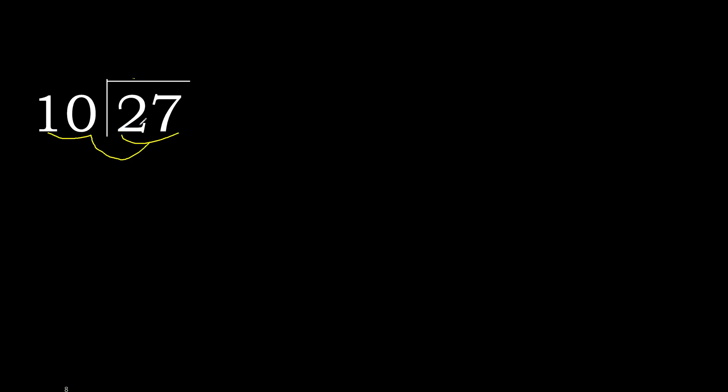27 divided by 10. 2 is less, therefore next. 27 is not less, so with 27, 10 multiplied by which number is nearest to 27 but not greater? 10 multiplied by 3 is 30, which is greater. Multiplied by 2 is 20, which is not greater. 27 minus 20 is 7.